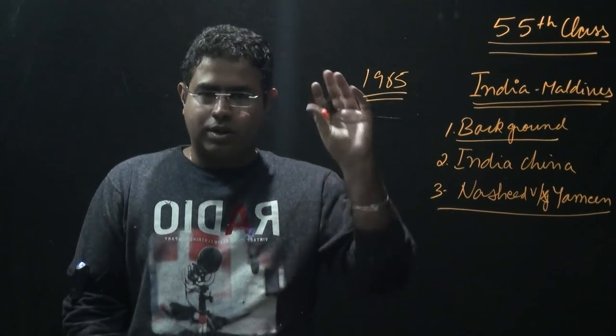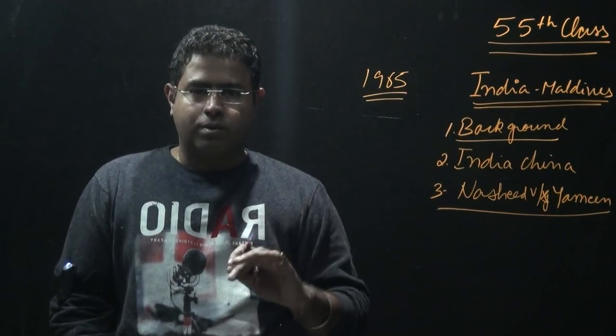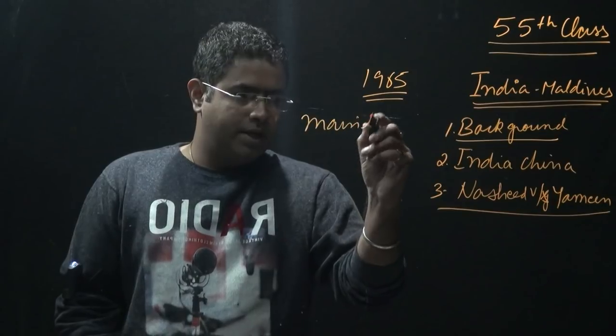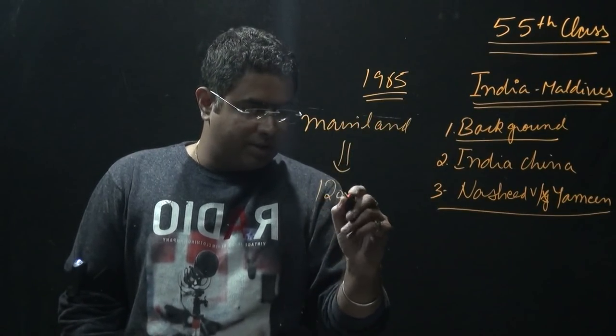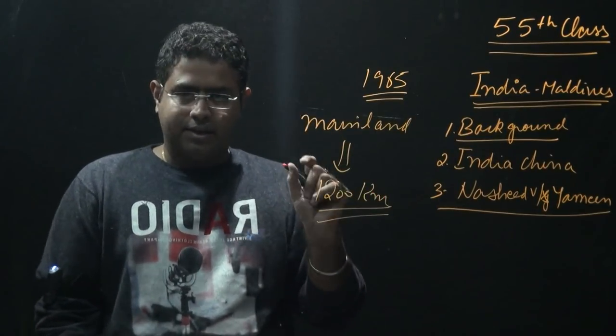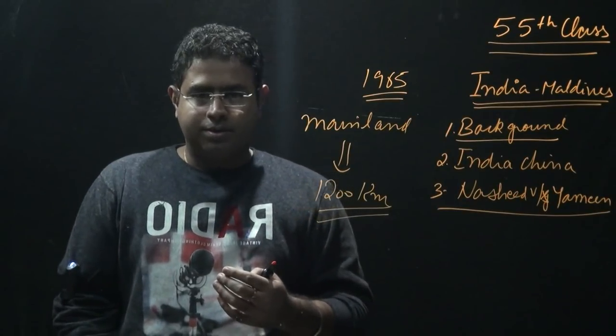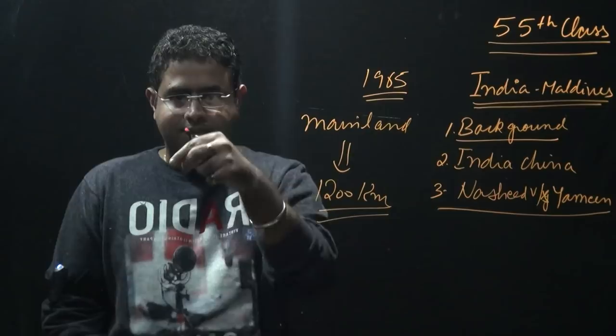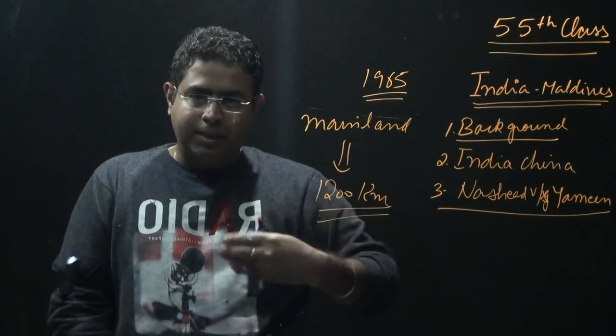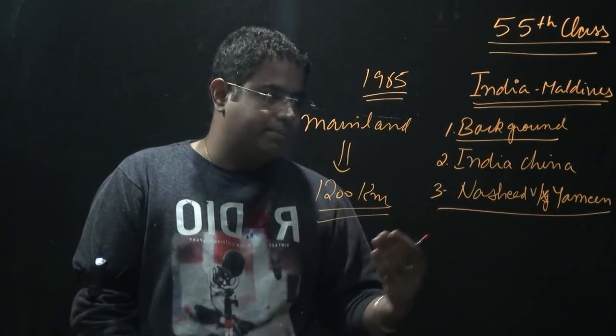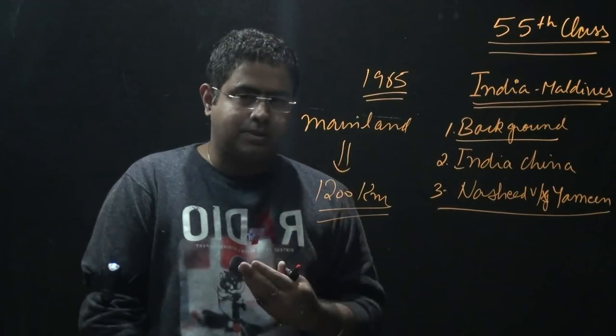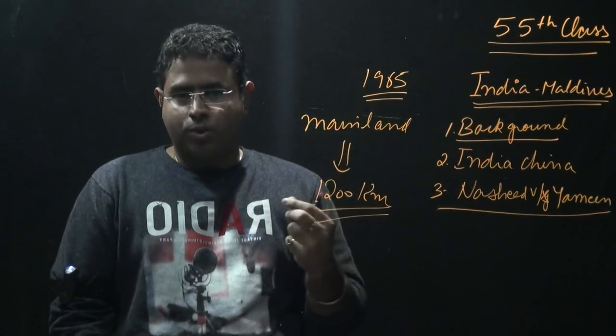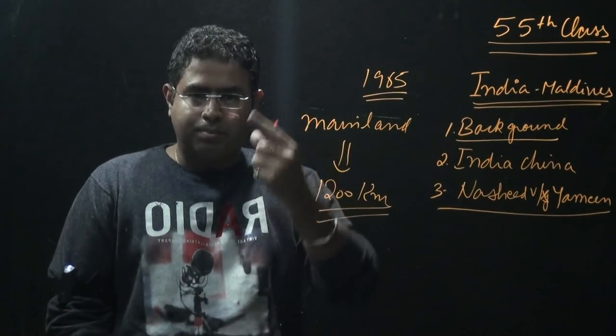When it comes to Maldives, you must have clarity about where Maldives is located. It is about 600 to 700 km from Lakshadweep islands of India and about 1200 km from Indian mainland. Why does this small island have so much importance for India? First reason is it is very near to India. Second important reason is its geopolitical and geographical equation - geography leads to politics.